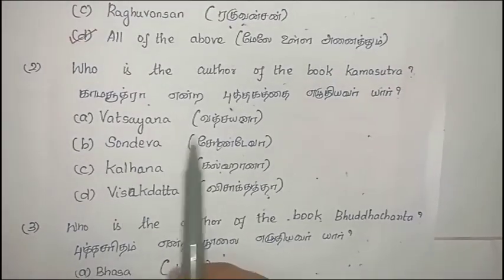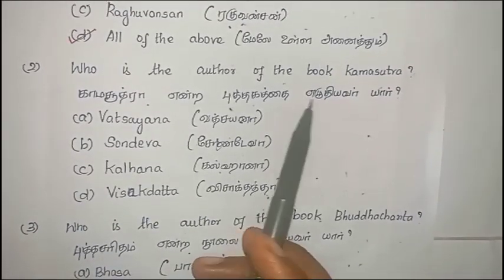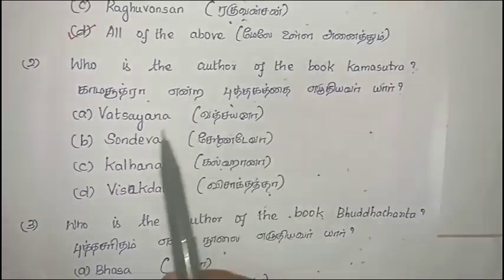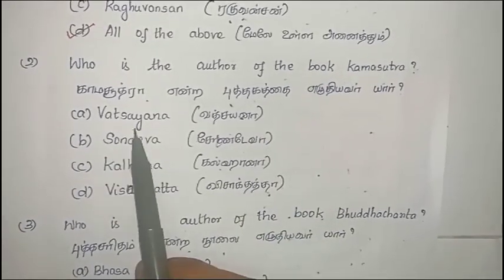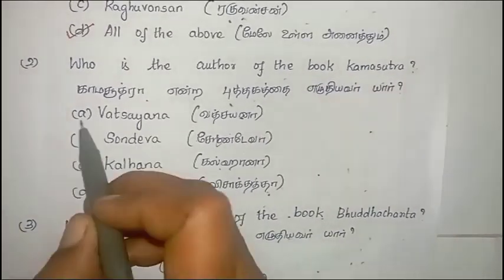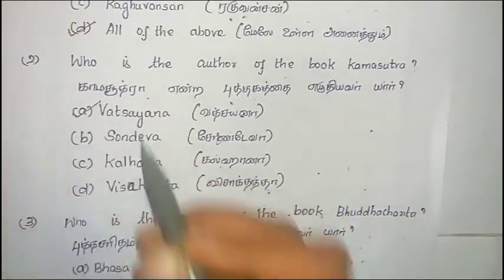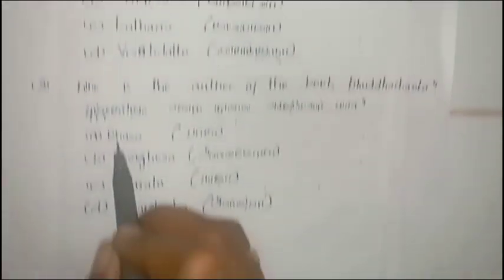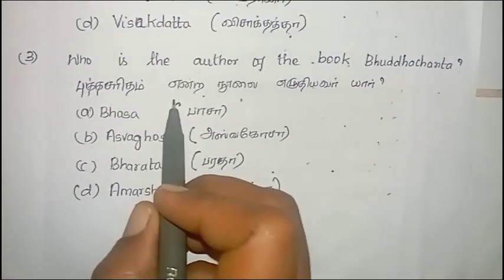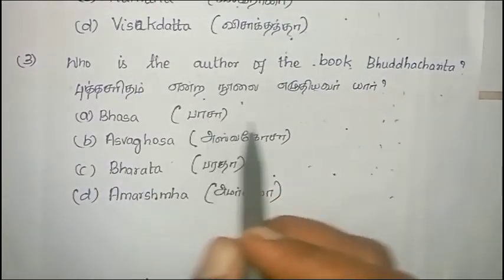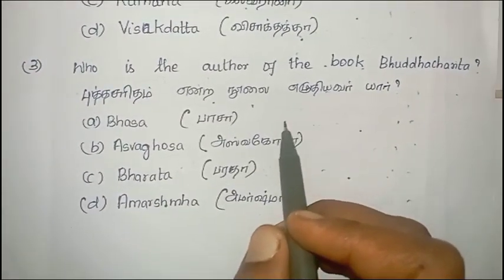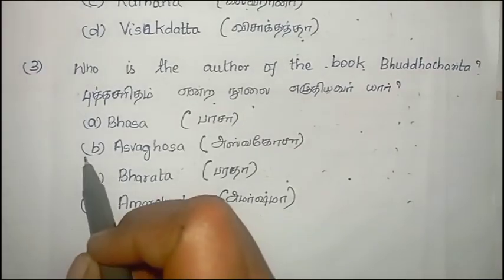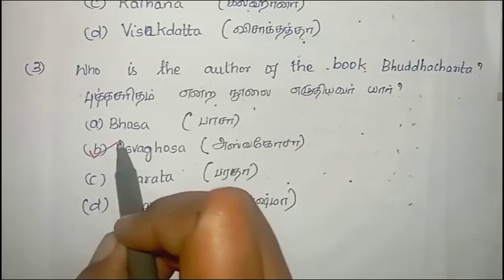Second question: Who is the author of the Kamasutra? Answer is Vatsyayana. Next question: Who is the author of the book Buddhacharita? Answer is Ashvaghosha.